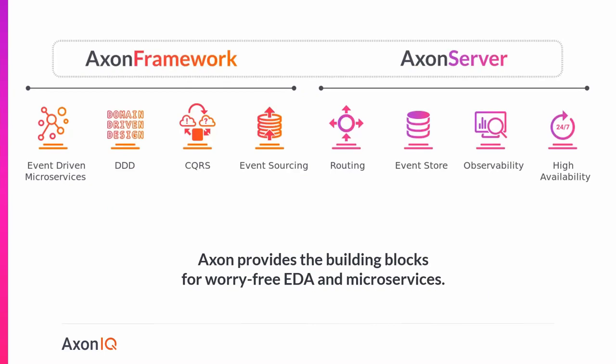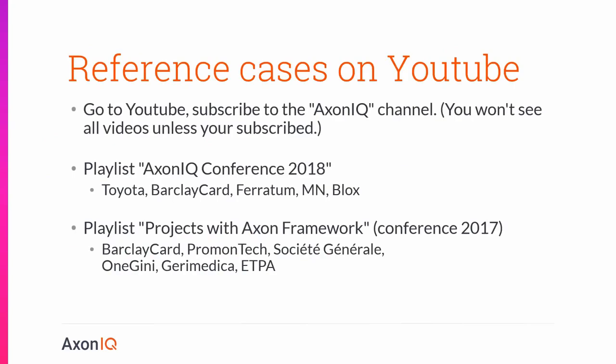To summarize: the complete Axon platform — framework and server — provides the building blocks for worry-free implementation of event-driven architecture and microservices, which have great benefits in and by themselves. We have many reference cases on YouTube. Subscribe to the Axonic channel — if you don't subscribe, you cannot see all the videos. The most recent playlist is Axon Conference 2018, with presentations by Toyota, BarclayCard, Ferratum, MN, and Blox. There's also a 2017 playlist called 'Projects with Axon Framework' featuring BarclayCard, Promontech, Société Générale, OneGenie, GeraMedica, and Epa.